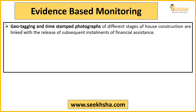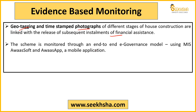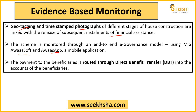There is a provision for evidence-based monitoring so that corruption does not happen. Every asset created will be geotagged and photographs will be taken to know what stage of completion the house is at and how much construction remains. Installments will be released based on this. The money - whether 1,20,000 or 1,30,000 or other scheme assistance - will not be given all at once. It will be released in stages based on photographs and geotagging. Money goes directly to beneficiaries via Direct Benefit Transfer.